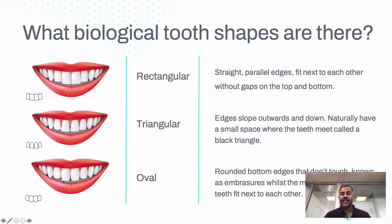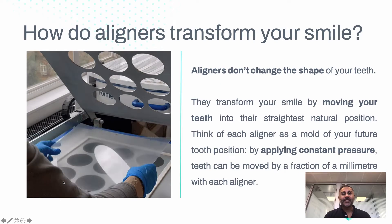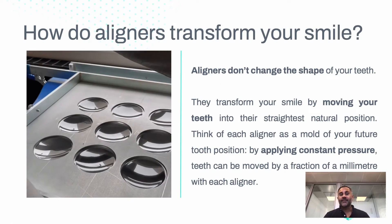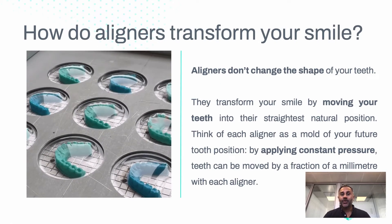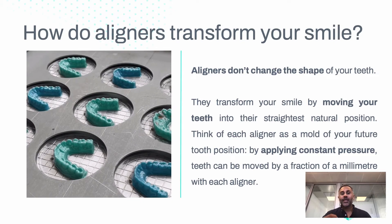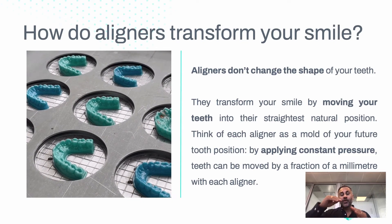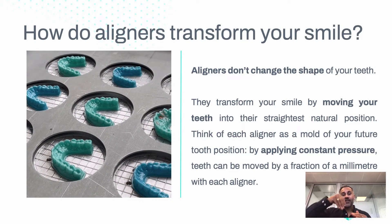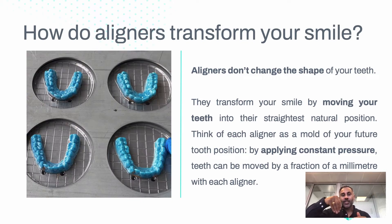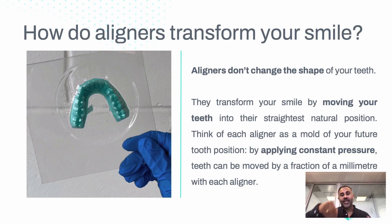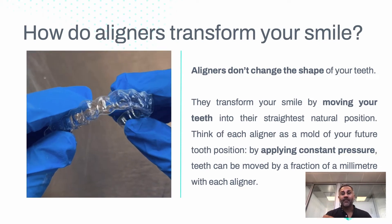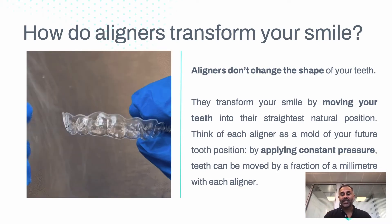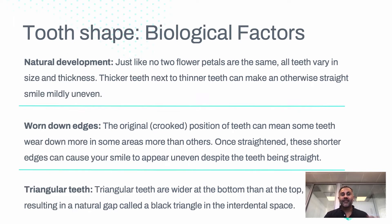Aligners don't change the shape of your teeth — they transform your smile by moving the teeth from their original position into a new position, applying constant pressure so teeth move a fraction of a millimeter each time. So things that we have to understand start with the nature of the teeth themselves.